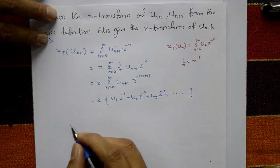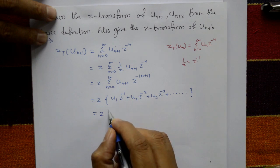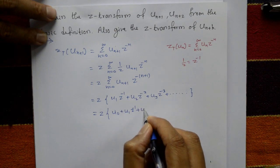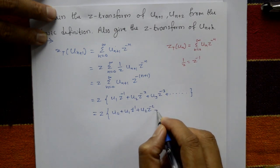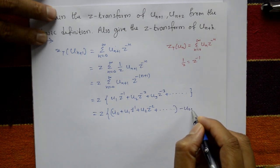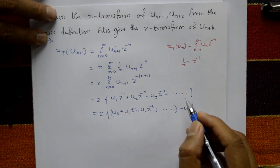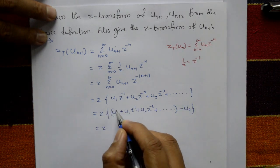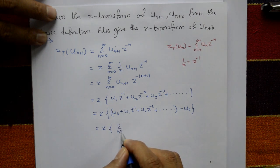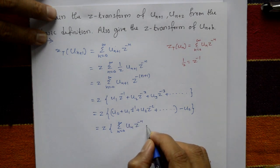In this series, u(0) is not present, so we add it. We write: u(0) + u(1) Z raised to minus 1 + u(2) Z raised to minus 2 + ... We are adding and subtracting u(0), so the series remains the same. The bracket becomes summation from n=0 to infinity of u(n) Z raised to minus n, minus u(0). Therefore, Z into that bracket gives Z times [U(z) minus u(0)].